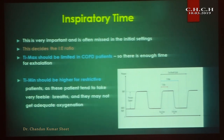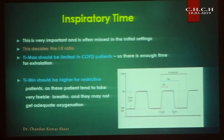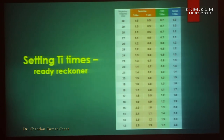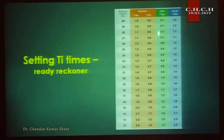The inspiratory time: in most ventilators we can fix the inspiratory time; there is no mode to fix the IE ratio directly, so IE ratio is managed by fixing the inspiratory time. T max should be limited in COPD patients because we need to wash out CO2, so expiratory time will be more and inspiratory time will be limited. In restrictive lung disease like ILD, kyphoscoliosis, or structural lung disease, T I minimum should be higher. In prefixed ResMed settings for COPD, T I max is low.